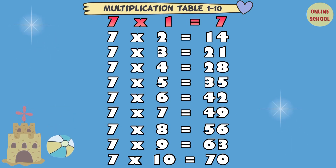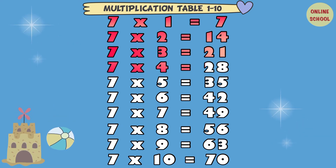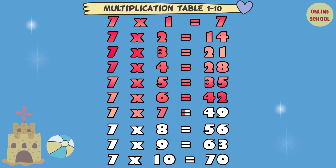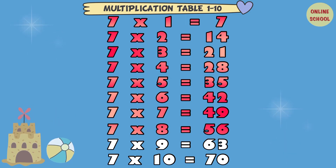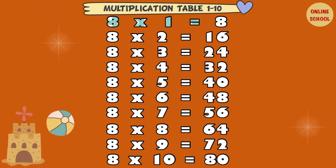7 x 1 equal 7. 7 x 2 equal 14. 7 x 3 equal 21. 7 x 4 equal 28. 7 x 5 equal 35. 7 x 6 equal 42. 7 x 7 equal 49. 7 x 8 equal 56. 7 x 9 equal 63. 7 x 10 equal 70.